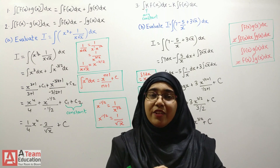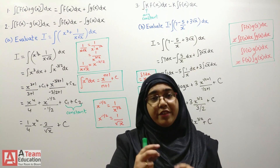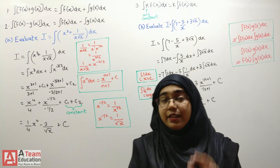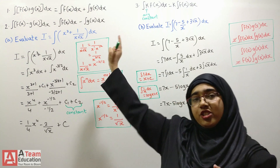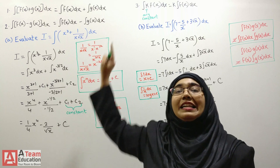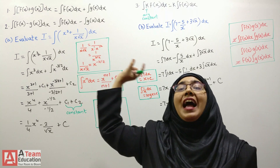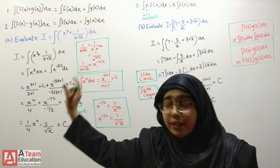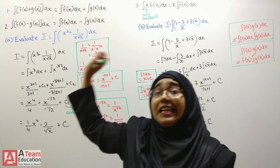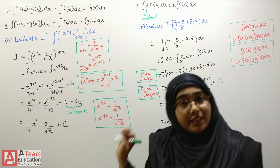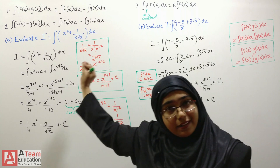Product rule we do not see here. We only see sum rule, difference rule, and constant rule. Sum rule means that if there are two functions added, you can give both functions to the integral sign — meaning you can separate the integral sign.